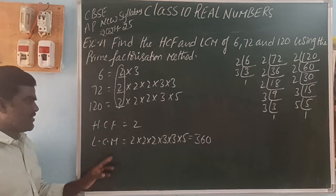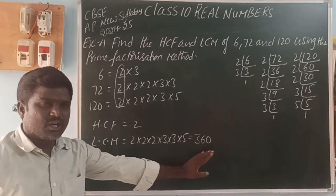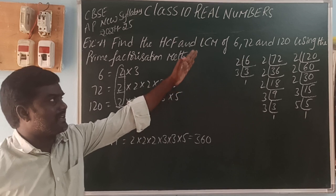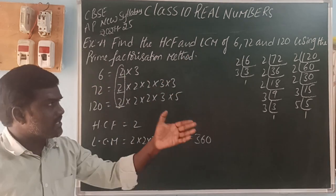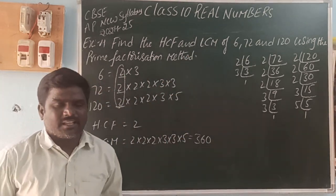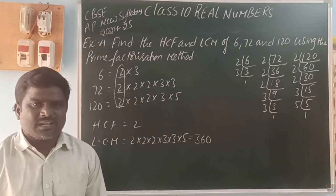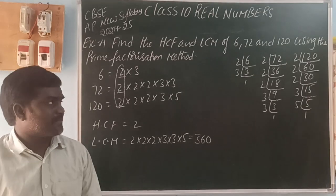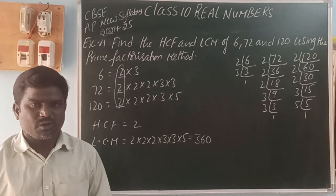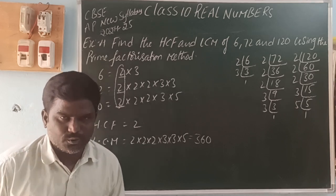So HCF is 2 and LCM is 360 of these three numbers 6, 72, and 120, by using the prime factors method. Thank you for watching my videos. Please subscribe to our YouTube channel and share with your friends. If you like it, please share. Thank you.